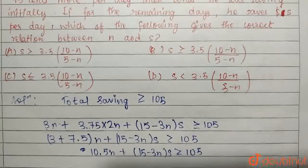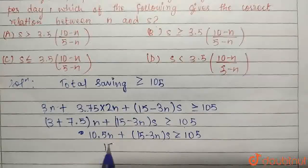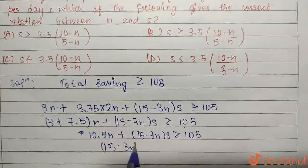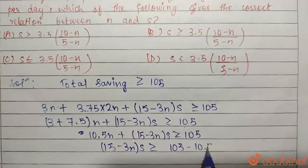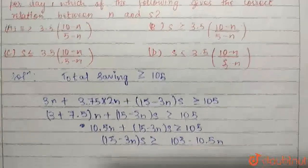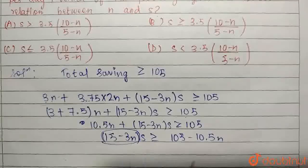Taking it over here, I can write 15 minus 3N into S greater than or equal to 105 minus 10.5N. And I can take the multiplication factor over here.